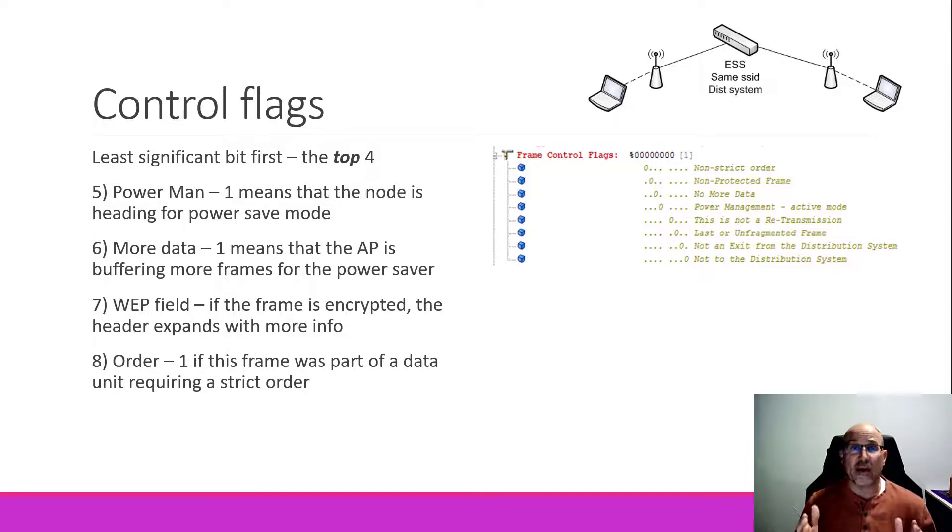If we have wired equivalent privacy turned on, WEP, then this flag will be set to 1. And at that point, the header has to be expanded to include some additional information. And the last flag is whether or not the data has to be ordered in a very particular way. If not, or if this is a singlet sort of frame, then this will be set to 0. But if order is important, then we're going to set this field to 1.